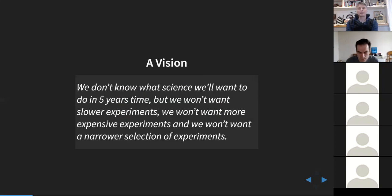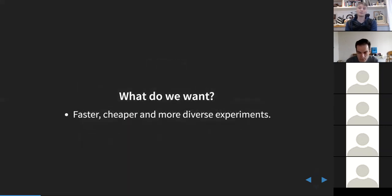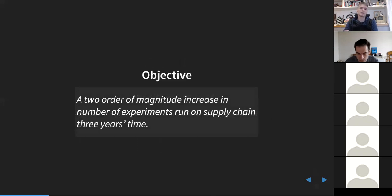A lot of the answers come from emulation, because we want faster, cheaper, and more diverse sets of experiments. In the supply chain we had the objective to increase by two orders of magnitude the number of experiments we could run. Those experiments range from practical A/B tests on business processes, to real-world physical experiments, to lots of experiments in simulation.